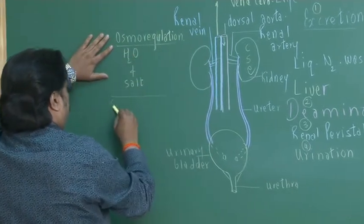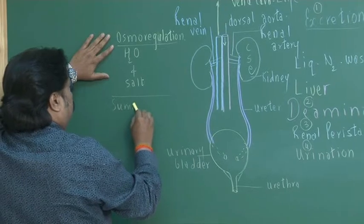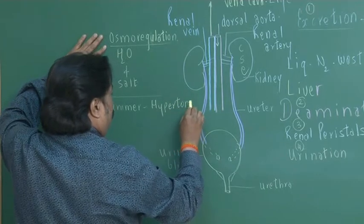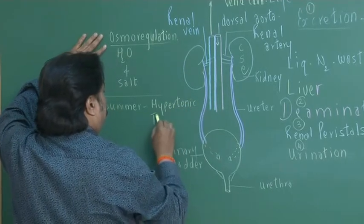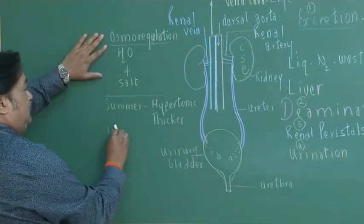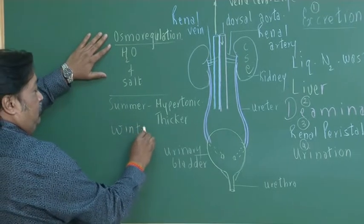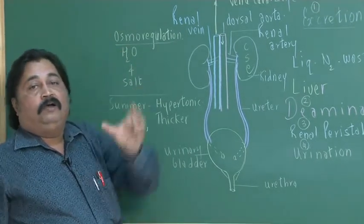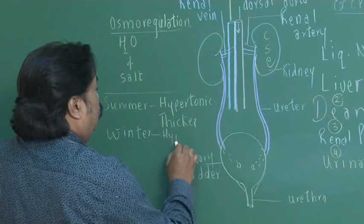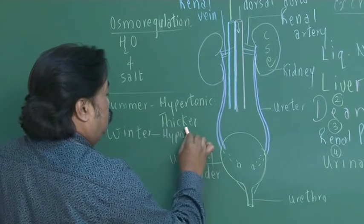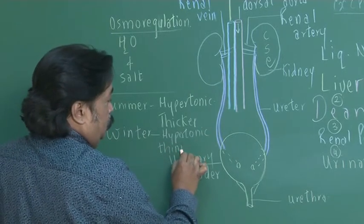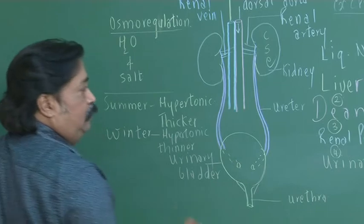During summer season, the urine released is hypertonic—that is containing more salt. It is thicker. Whereas, during winter season, as I told you, winter vasodilation is summer, vasoconstriction in winter. During winter season, the urine is containing a lot of water. It is voluminous, hypotonic, and we urinate also frequently. That is thinner.